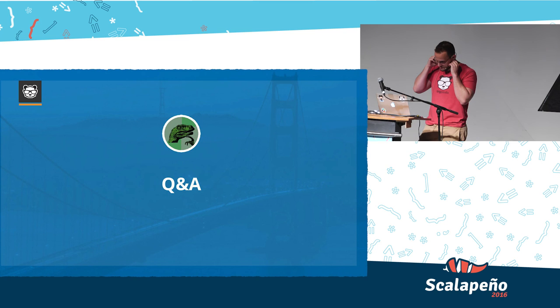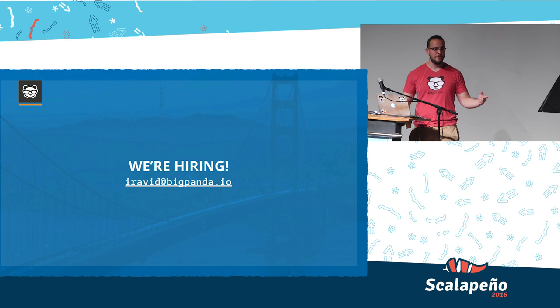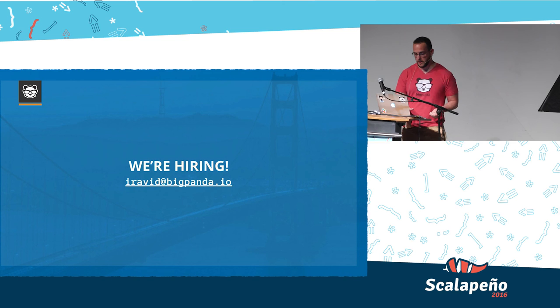Now one last thing, we're hiring. So if you like what you've seen here, shoot me an email at itamar@bigpanda.io. I've dropped here a grocery list of libraries that we've used because I spent a lot of time researching the different libraries. What should I use for JSON, what should I use for Rabbit? So we just dumped here the libraries that we're using. We're very satisfied with them. Thank you.